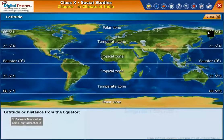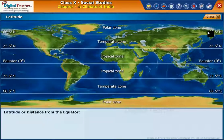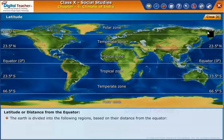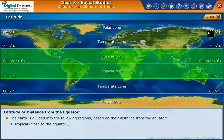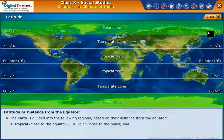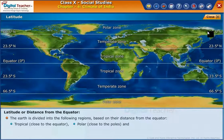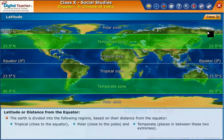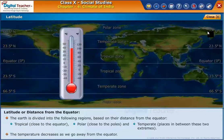Let us now learn about each of these factors in brief. Starting with latitude or distance from the equator: the earth is divided into the following regions based on their distance from the equator — tropical, close to the equator; polar, close to the poles; and temperate, places in between these two extremes. The temperature decreases as we go away from the equator.